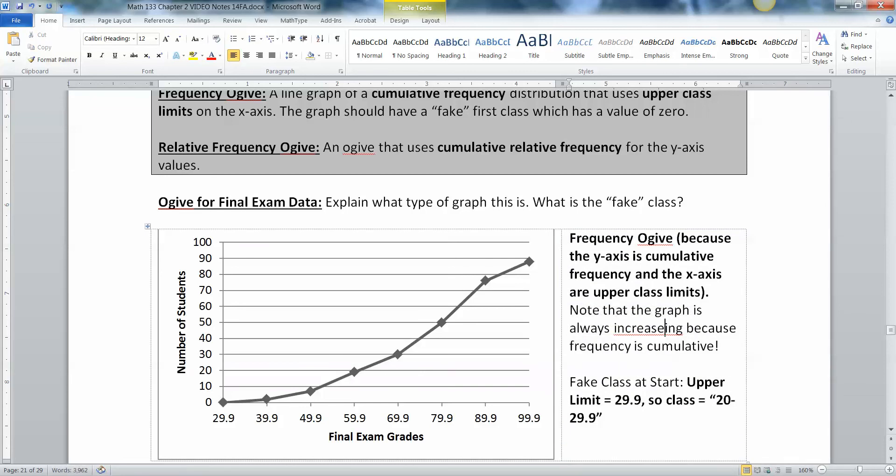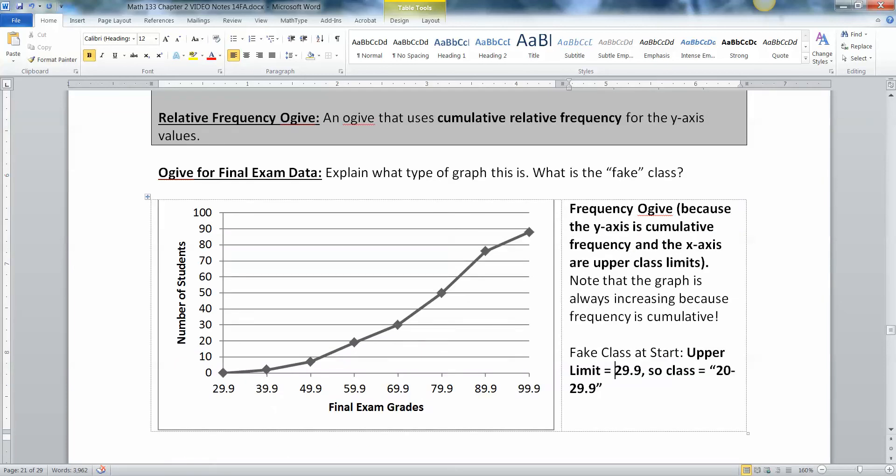So the graph is always going up because frequency is cumulative. So it's like you're climbing the mountain, right? If you ever watched The Price is Right as a kid, it reminds me of Yodeler, climbing up the mountain. Now, the fake class at the start is the same fake class we ran into before, but you'd have to spot it a different way. This is the upper class limit of 29. So that means the next class starts at 30. So again, that distance of 10, 29 to 39 is 10, 39 to 49 is 10. So if that class starts at 30, then the one before it must start at 20. So you're kind of using logic and the class width to kind of figure that out.